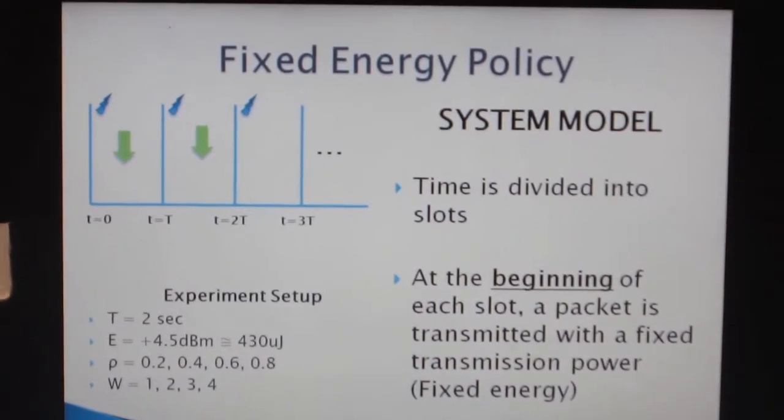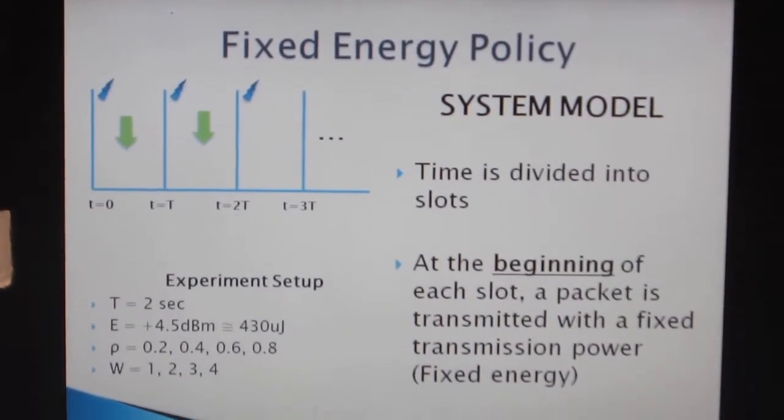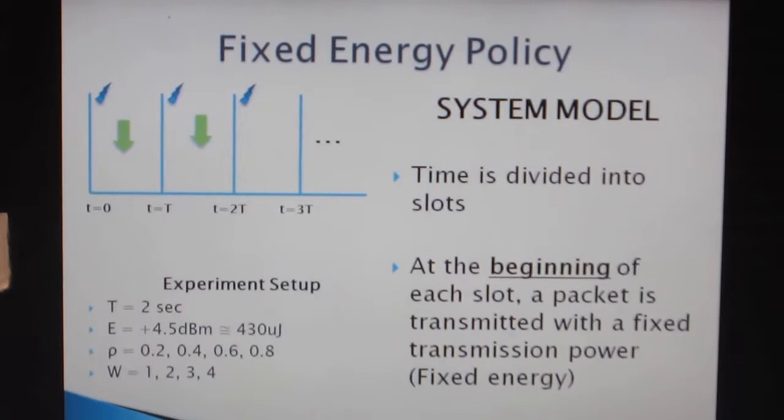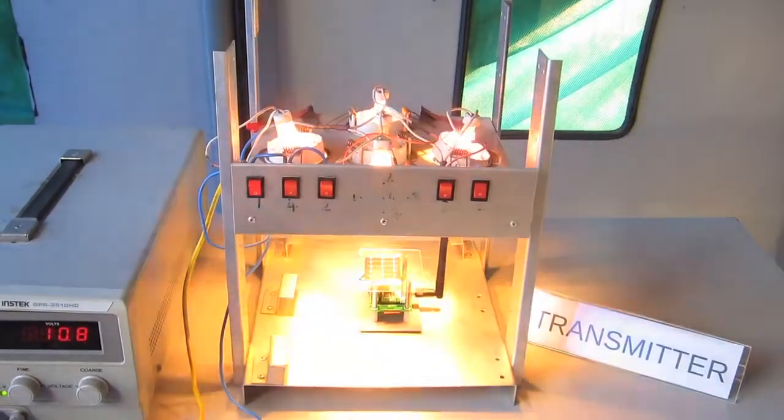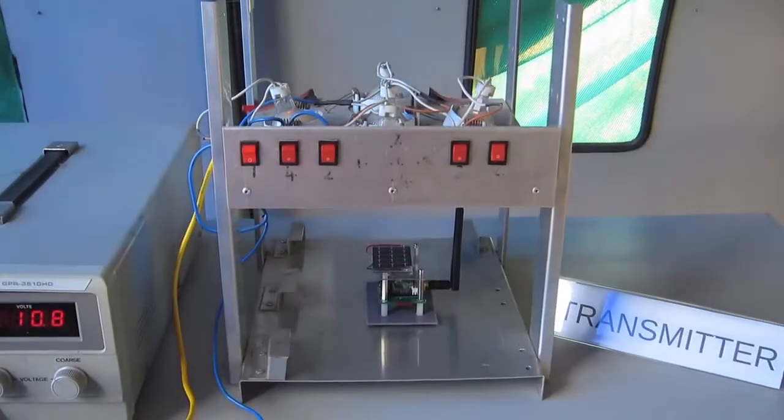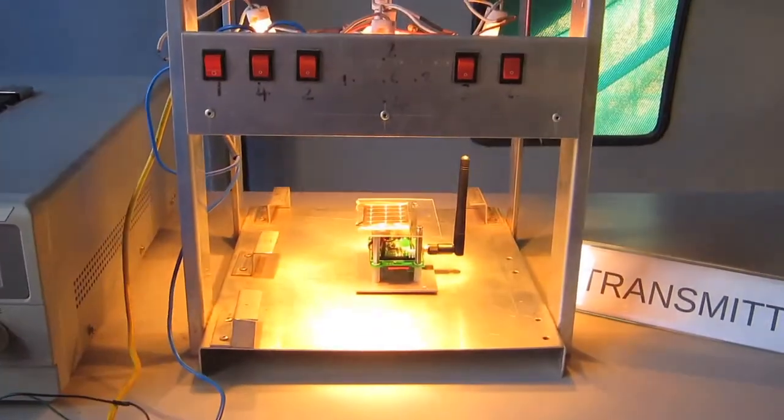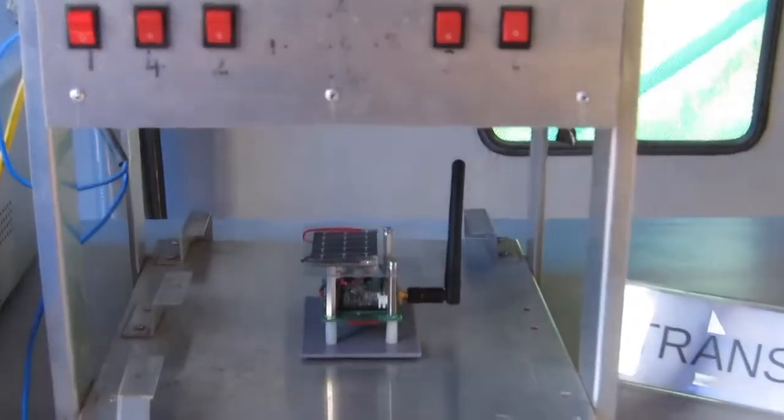An outage is defined as an event where a packet transmission is not possible because of insufficient energy or the packet that arrives is corrupted. This setup lets us emulate the Bernoulli distribution. The harvested energy is stored in a supercapacitor and used accordingly.